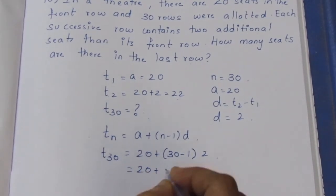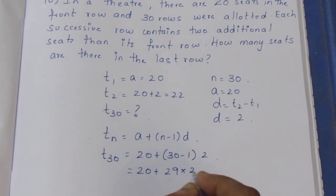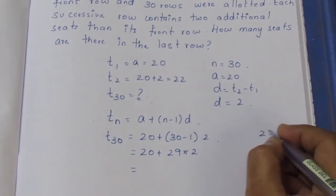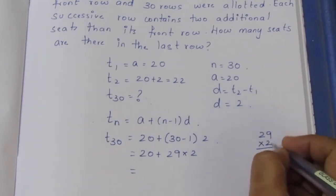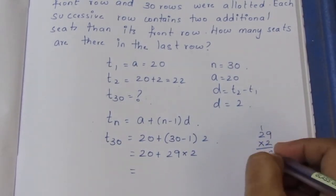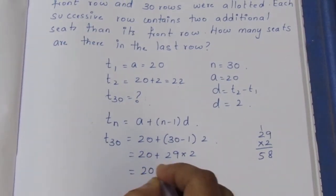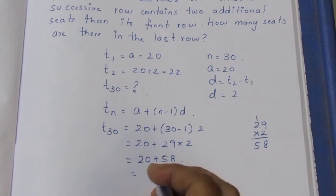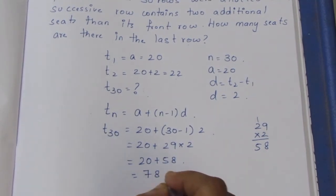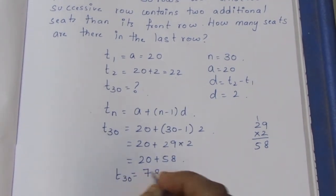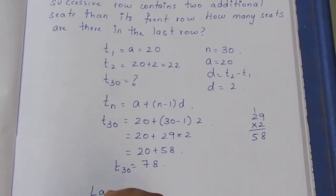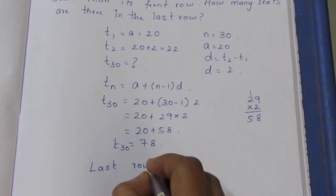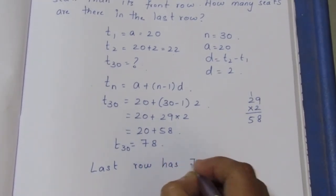20 plus 29 into 2. 29 times 2 is 58. So 20 plus 58 equals 78. The last row has 78 seats.